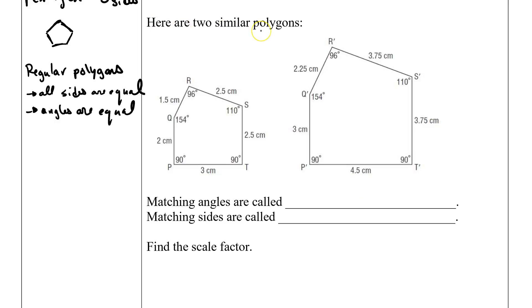So here are two similar polygons. Matching angles are called corresponding angles.